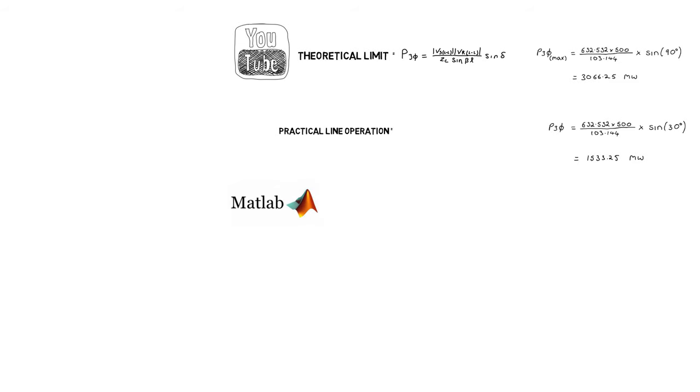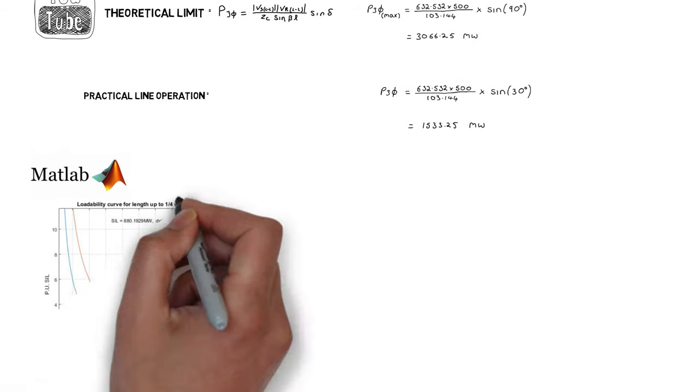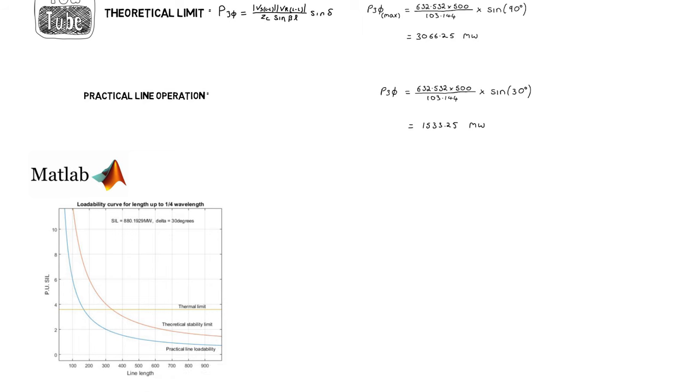I will now use MATLAB to verify these results. The thermal limit usually determines the max power flow for short to medium length lines. For long lines it is usually the practical limit. This can be observed here.